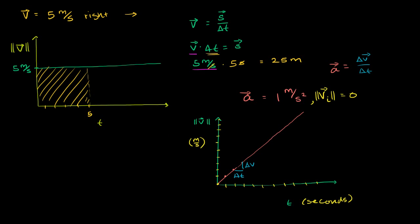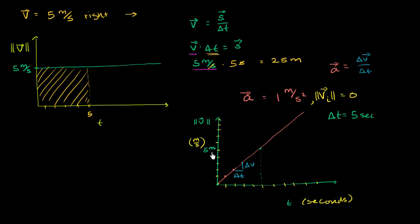Now let's say we accelerate at 1 meter per second squared for a change in time of 5 seconds. How far have we traveled? We start with an initial velocity of 0, and for 5 seconds we accelerate at 1 meter per second squared — 1, 2, 3, 4, 5. After 5 seconds, our velocity is now 5 meters per second. But how far have we traveled?